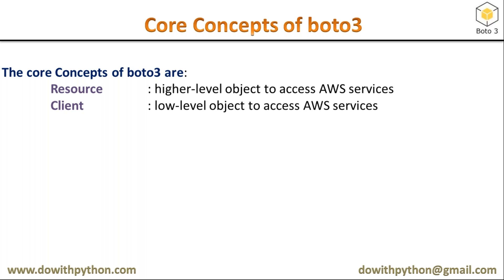Resource is a high-level object and its operations are dot operations. With client, you first create the object and then perform dictionary-style manipulations on the response.